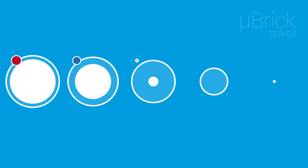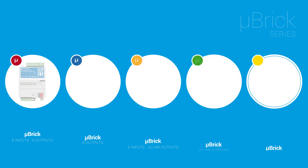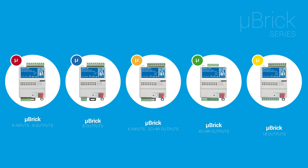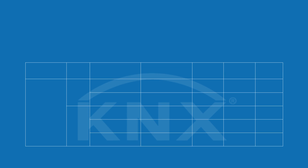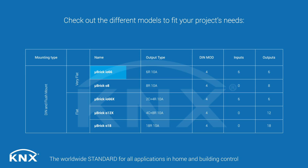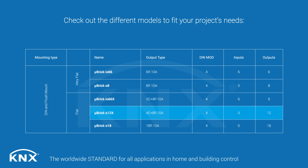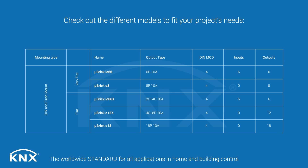The Microbric Series by I-PASS is the most innovative approach to actuators in KNX. Check out the different models to fit your project's needs, from 6 to 18 channels, including some C-Low channels, with and without binary inputs.